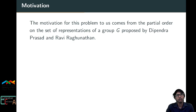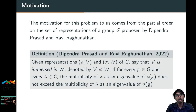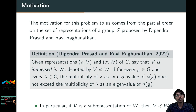Another motivation comes from the partial order on the set of representations of a group G proposed by Dipendra Prasad and Ravi Raghunath. Given representations (ρ, V) and (σ, W) of G, we say V is immersed in W if for every g in G and every λ in ℂ, the multiplicity of λ as an eigenvalue of ρ(g) does not exceed that of σ(g). In particular, if V is a sub-representation of W then V is immersed in W.